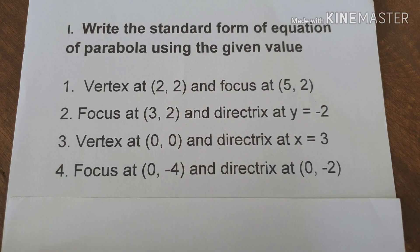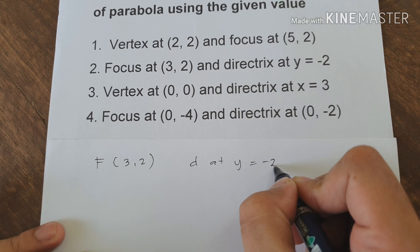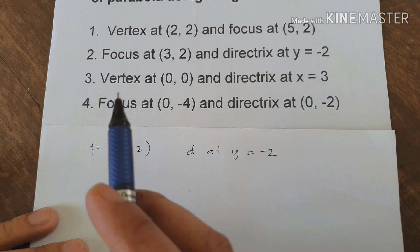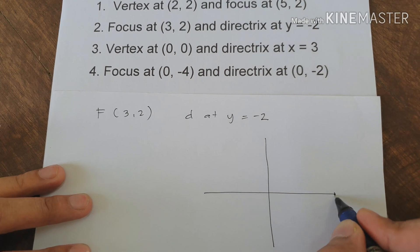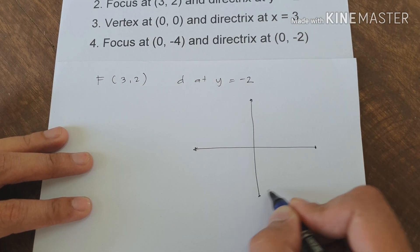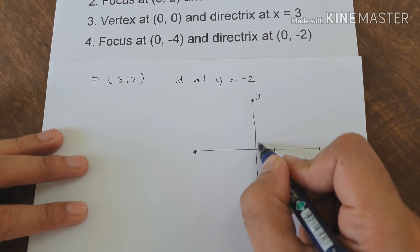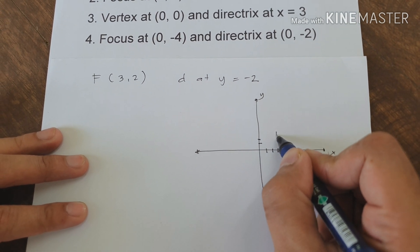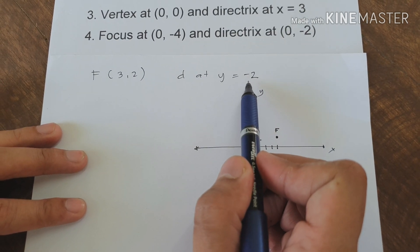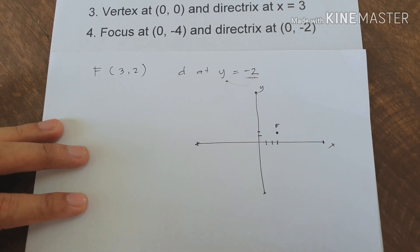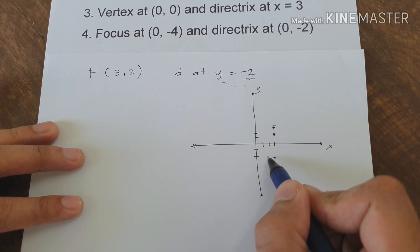For example number 2, we have the given focus at (3, 2) and directrix at y equals negative 2. Let us locate and plot the given values. We have the focus at (3, 2) on the coordinate plane. For the directrix y equals negative 2, we look for negative 2 on the y-axis. This is our line of directrix.